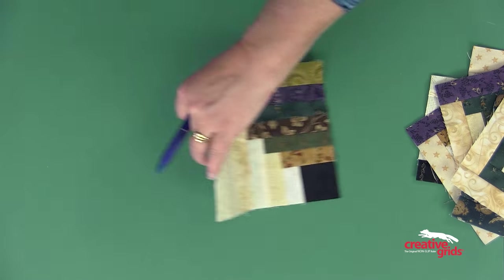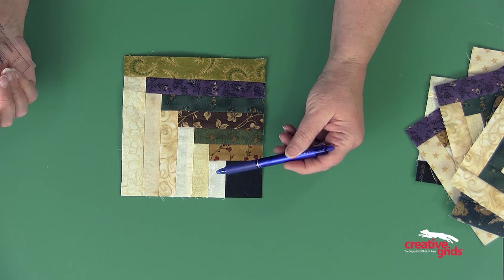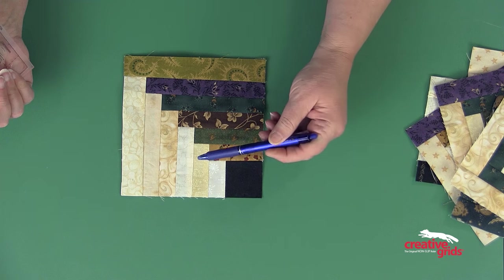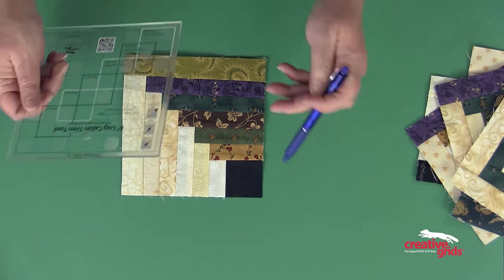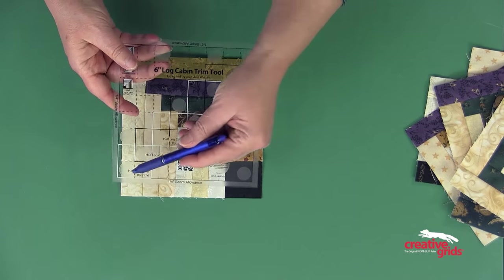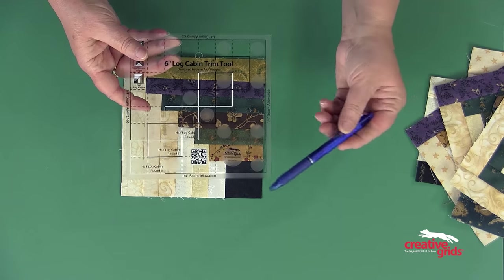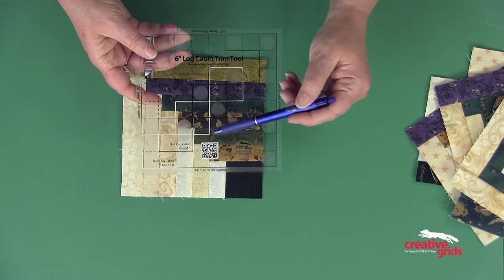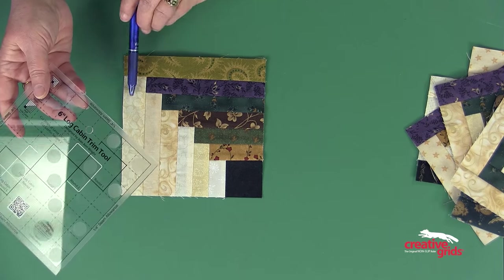The fourth block I can make with this is a half log cabin. In the half log cabin, I'm going to add a light and a dark and trim, a light and a dark and trim, and continue six times. That is why there are nested squares going down the entire center part of the ruler, because if you're doing the half log cabin, you're also going to have to trim round four, five, and six.